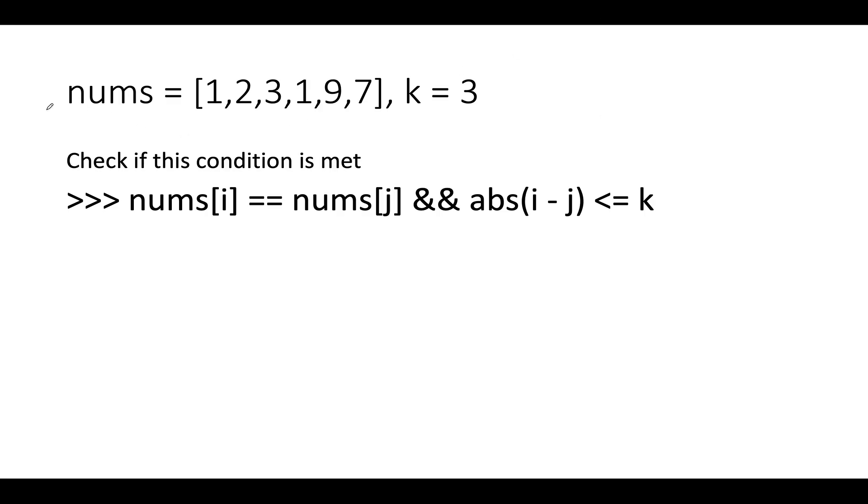Let's talk about the same example that was specified in the question. The question says check if these two conditions are met: there exist two indexes i and j such that the value at both these indexes are equal and the distance between i and j is less than or equal to k. How are we going to solve this?